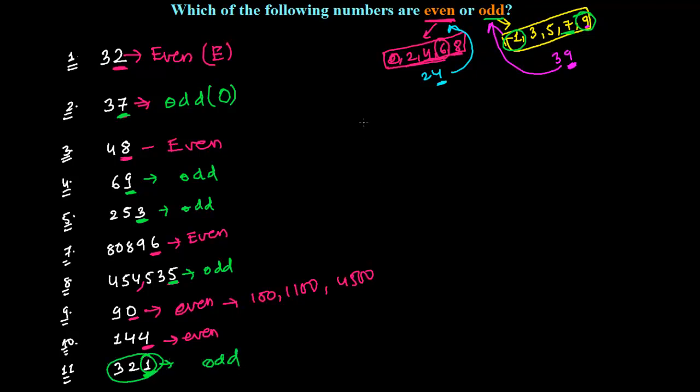So finally, everything comes down to these digits. Any number whose last digit is 0, 2, 4, 6, or 8 is an even number.